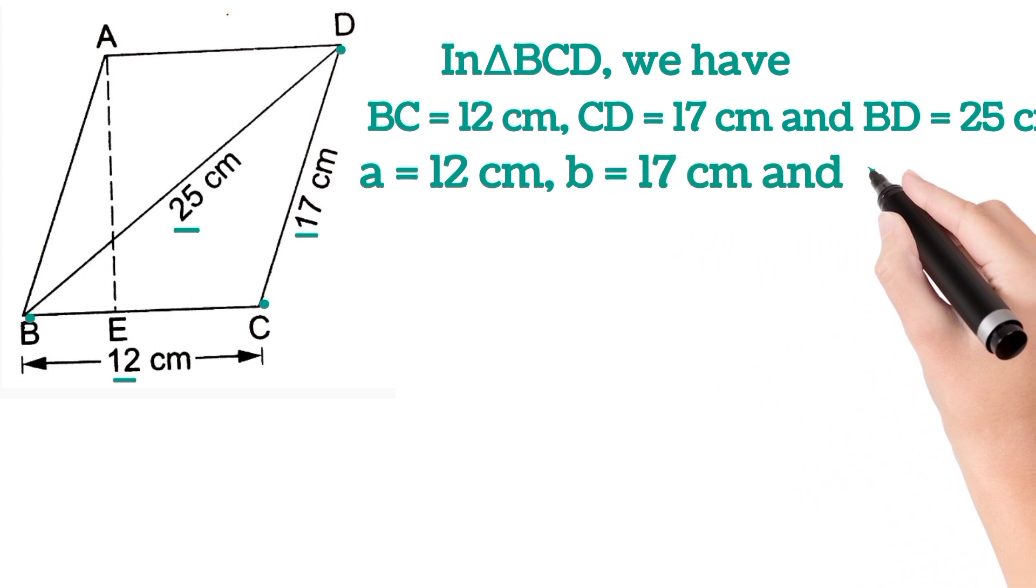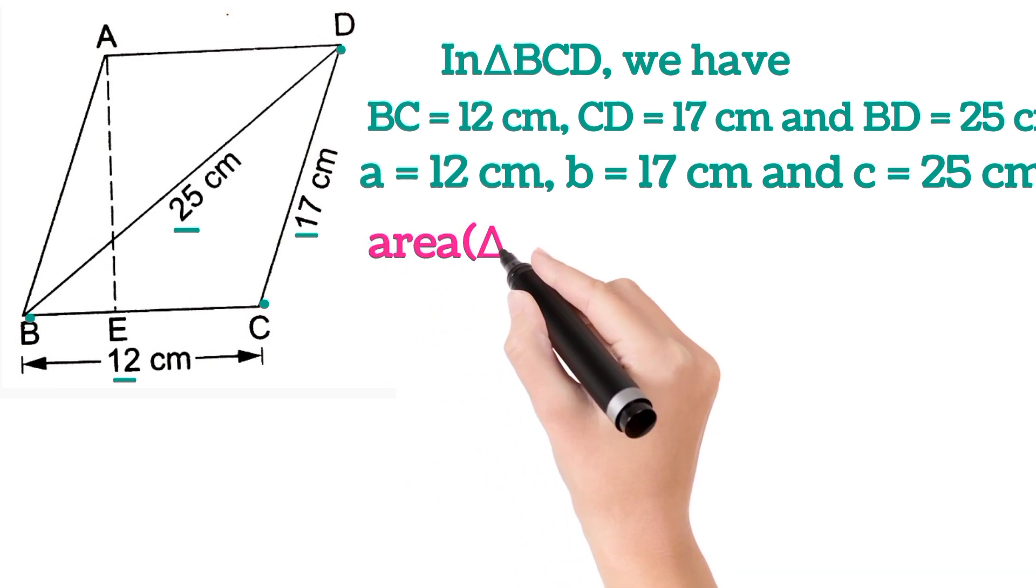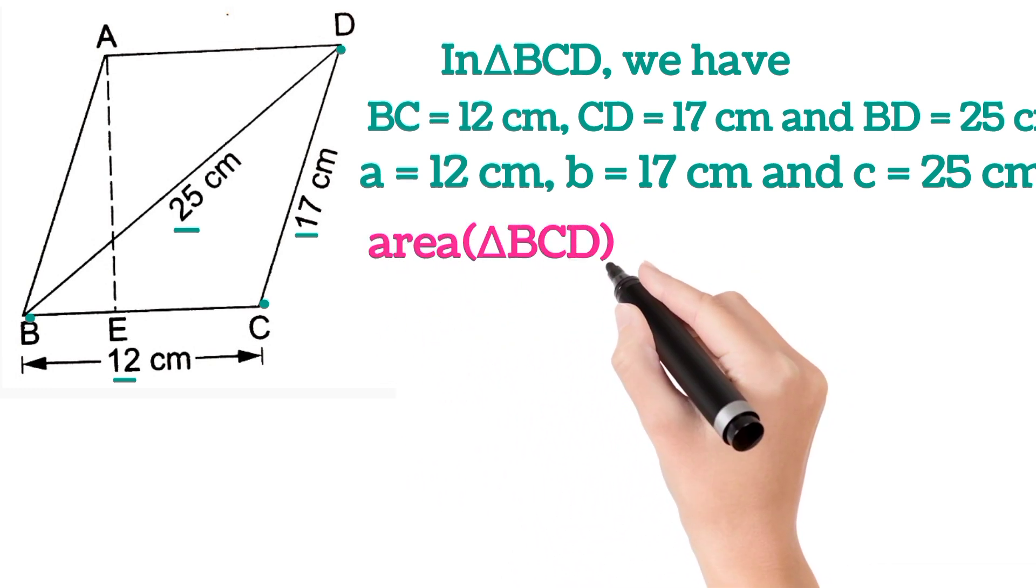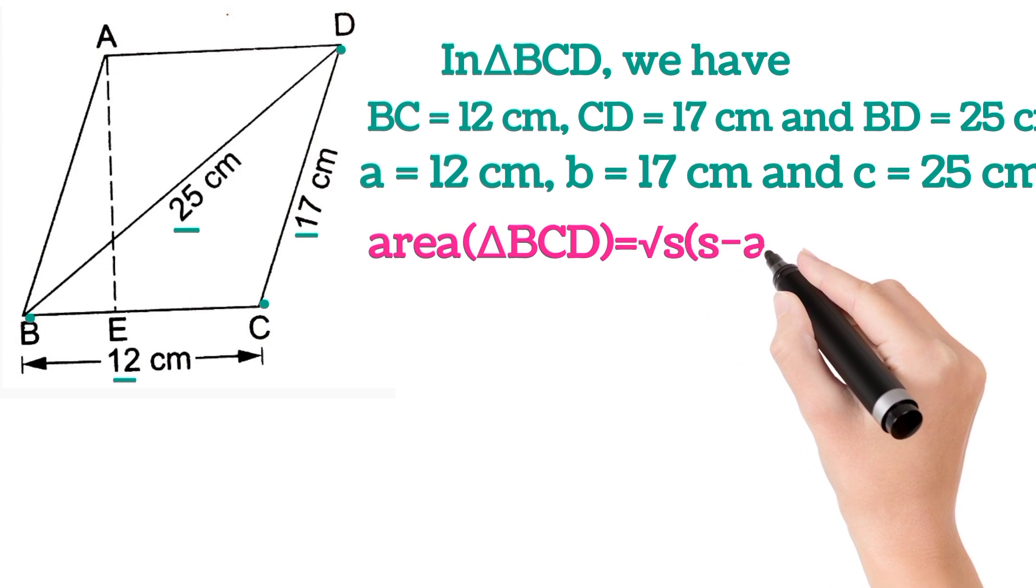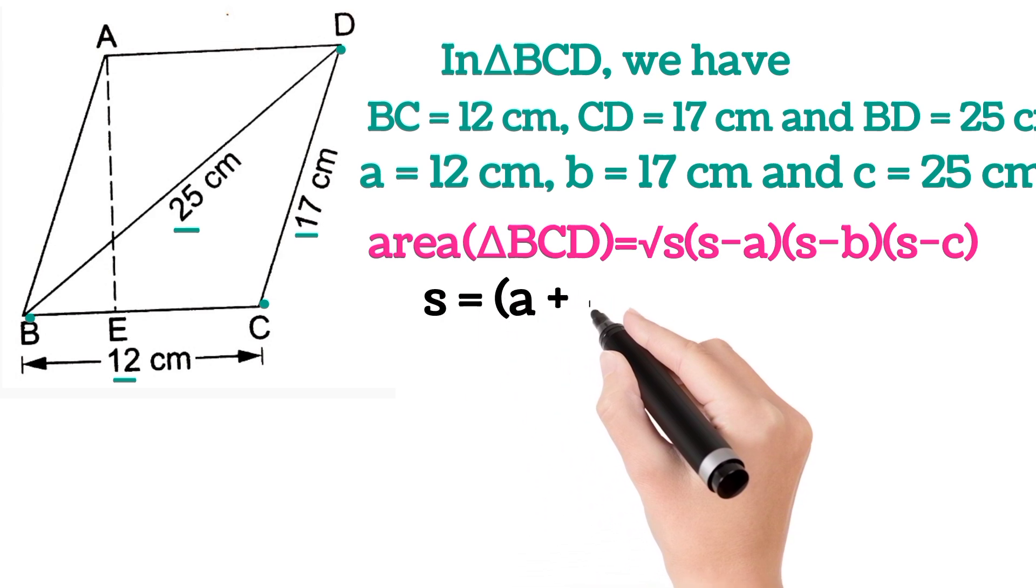Now area of triangle BCD is equal to square root of s(s minus a)(s minus b)(s minus c), where s is (a plus b plus c) divided by 2.